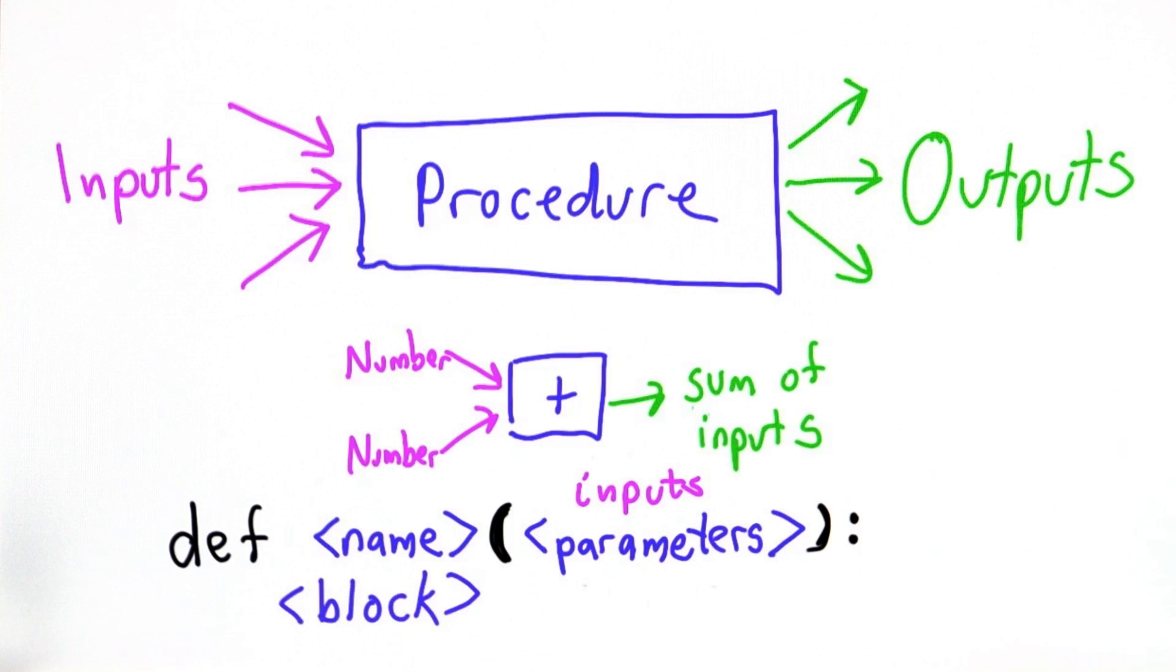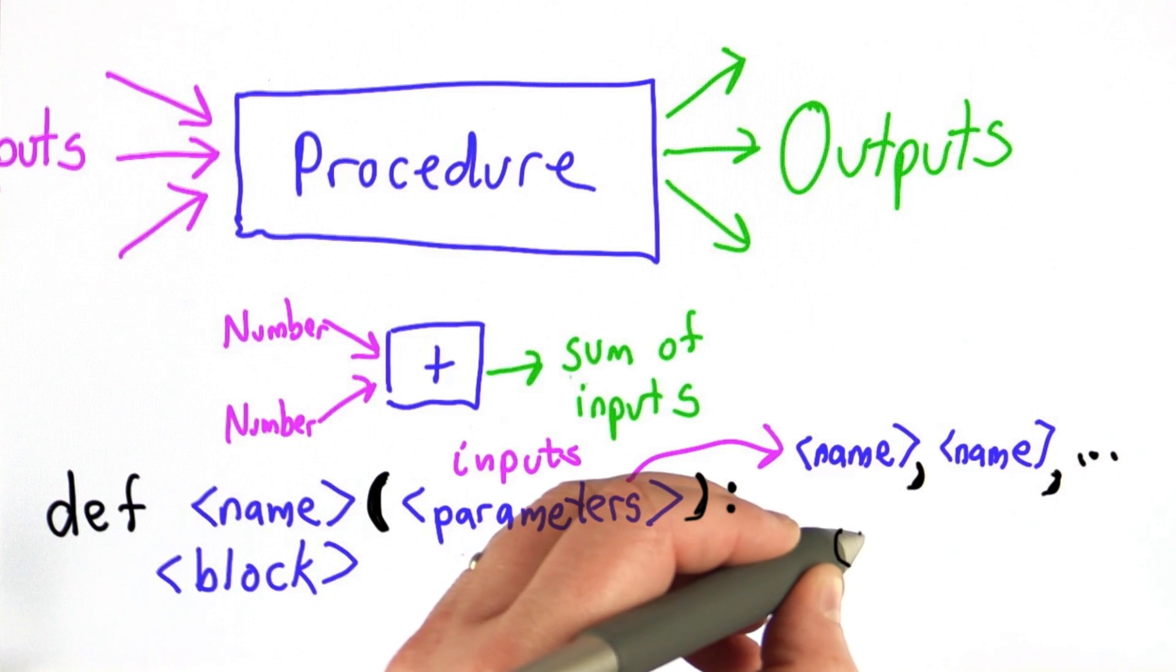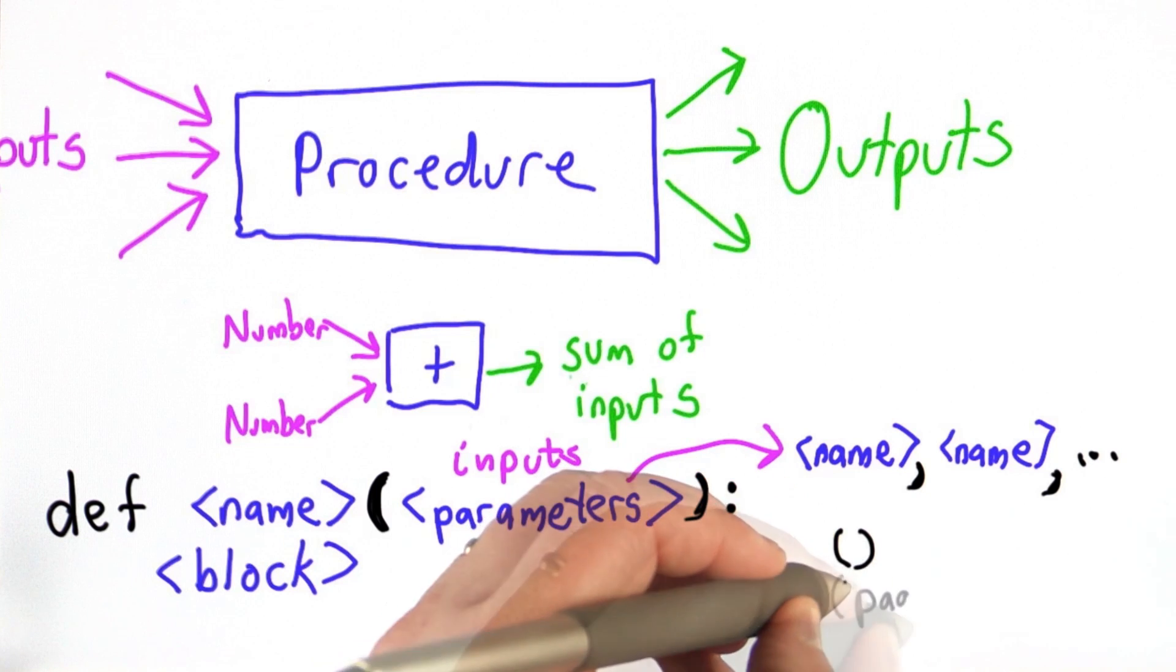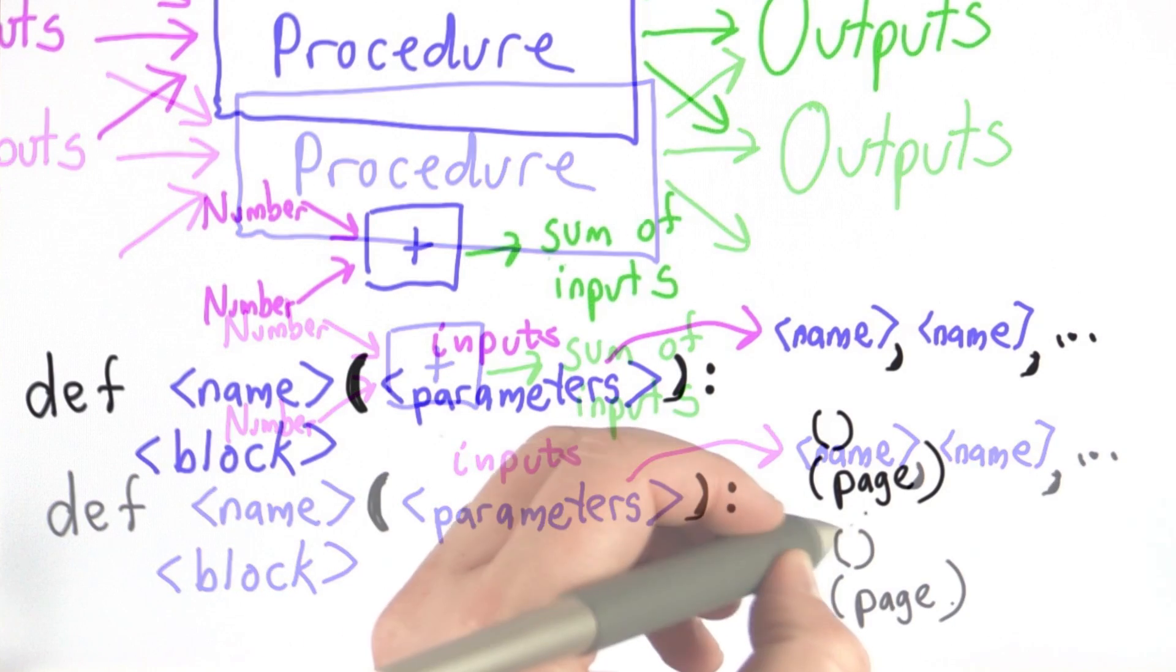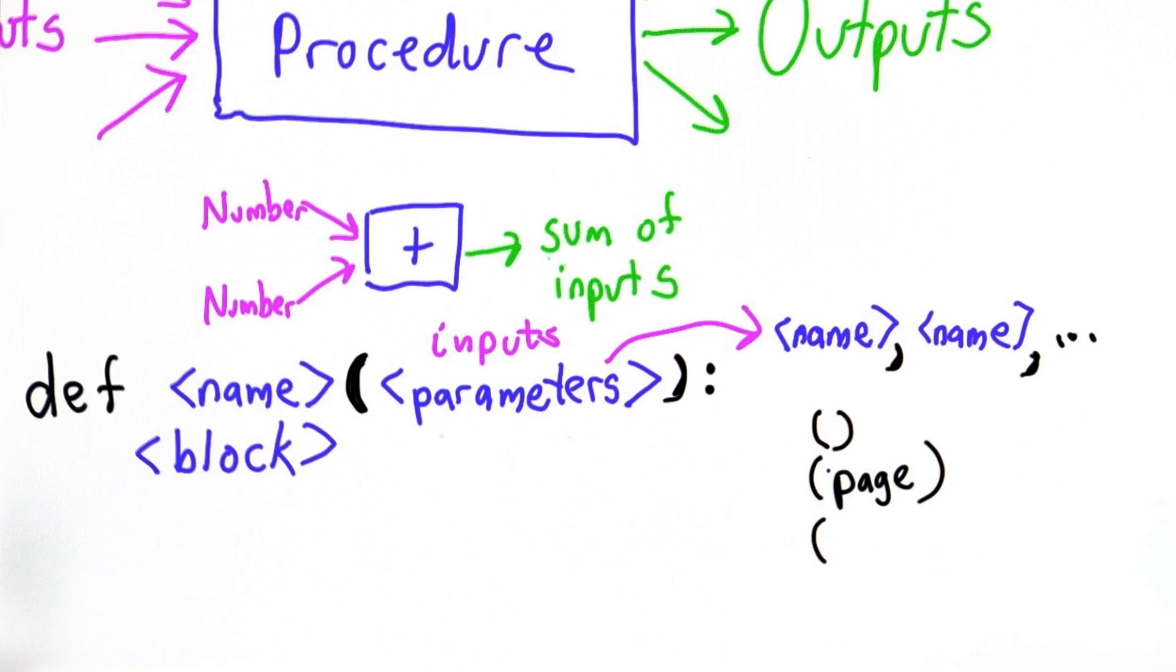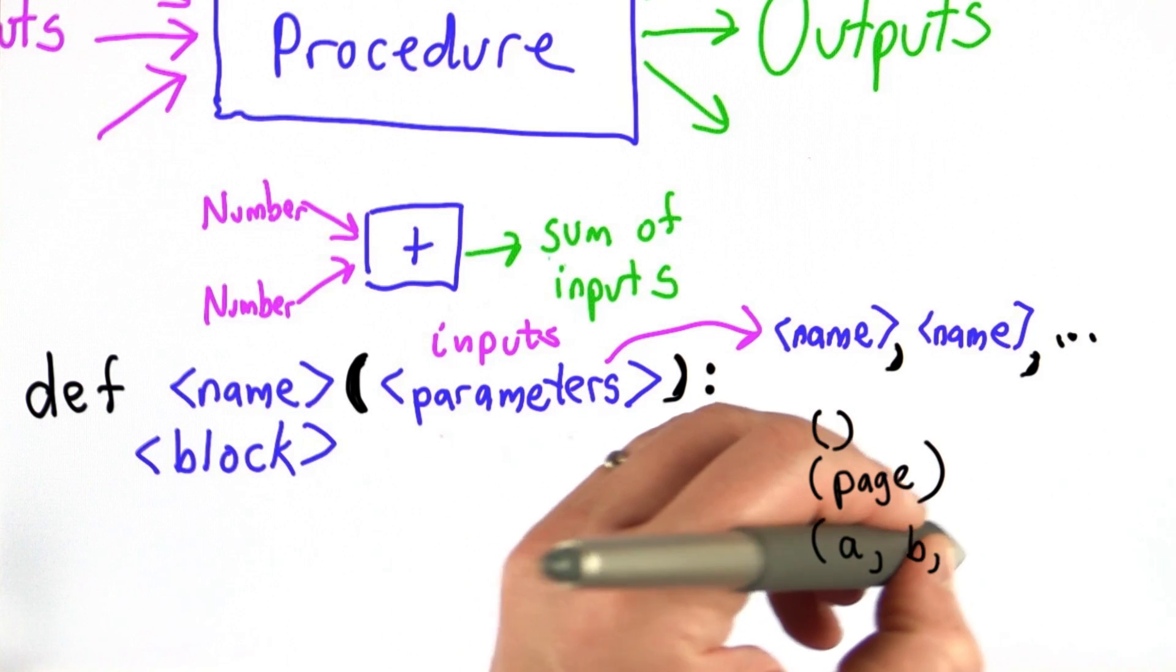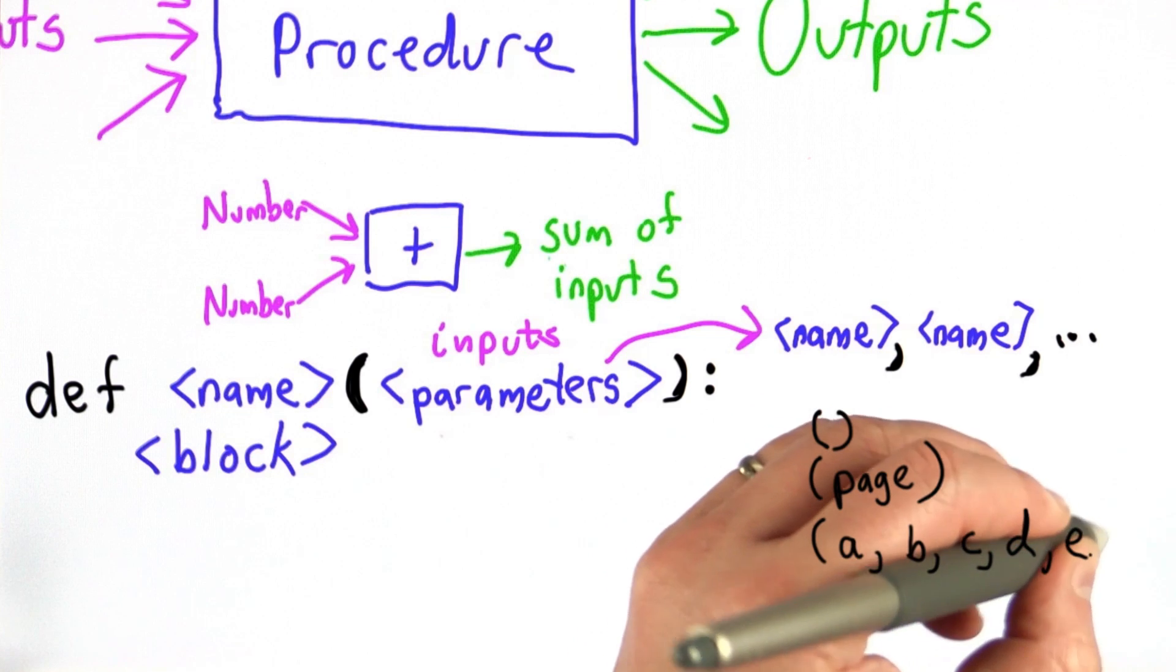What the inputs are is just a list of names separated by commas. We can have as many inputs as we want. There could be no inputs. In that case what the parameters would look like is just two parens with nothing between them. There could be one input. In that case we'd have a paren followed by a name, followed by a close paren. Or there could be many inputs. In which case we'd have a paren followed by the name of the first input, followed by the name of the second input, followed by the name of the third, followed by as many inputs as we want.